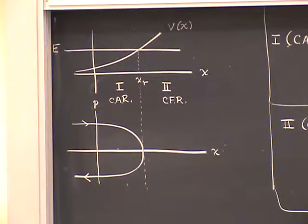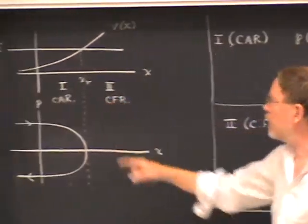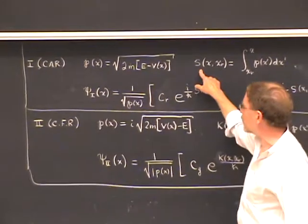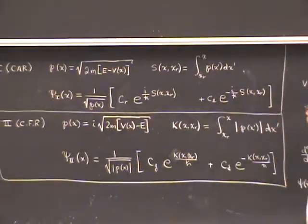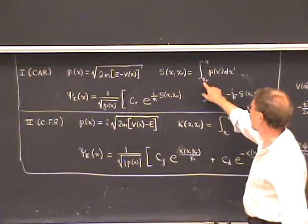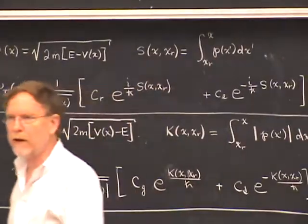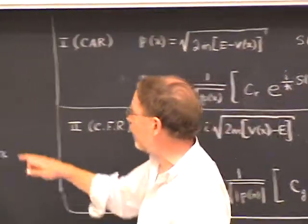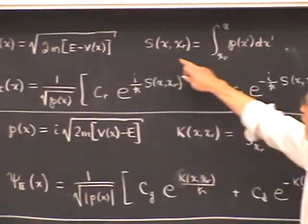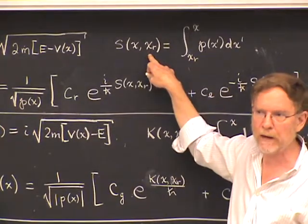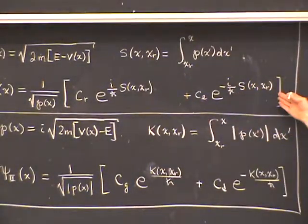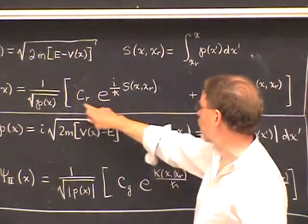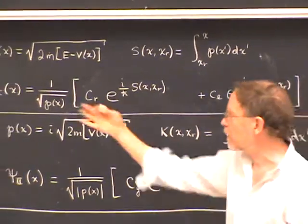Using the WKB solutions we've worked out so far, in a classically allowed region, which is region number 1, the momentum function is defined as a real and positive function. The action function S, which appears in the exponent, is basically the integral of pdx. The most obvious point to choose for the lower limit is the turning point itself, and I've called it S of x comma XR to indicate what the lower limit of integration is. Using a linear combination of the forward and backward solutions, with coefficients C right and C left, this gives a general linear combination in the classically allowed region.